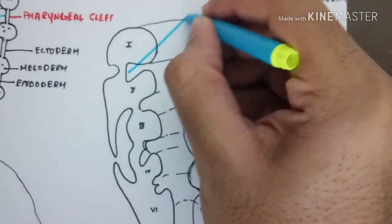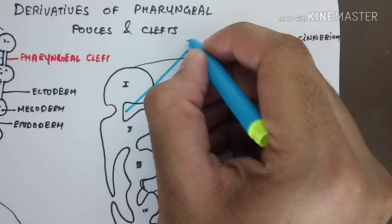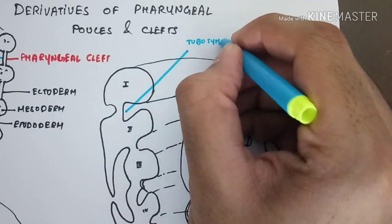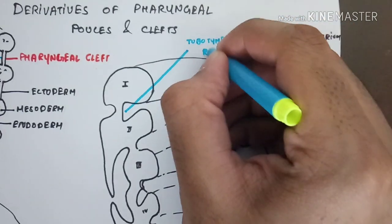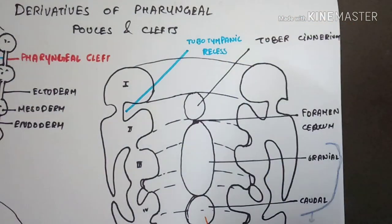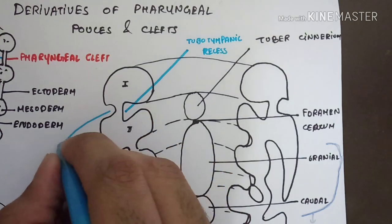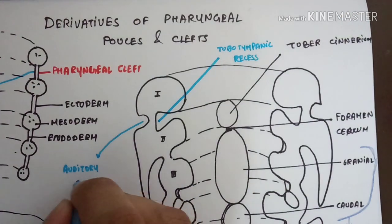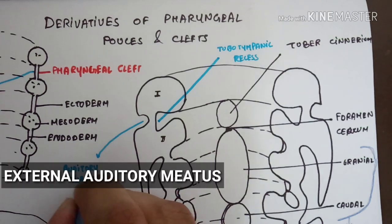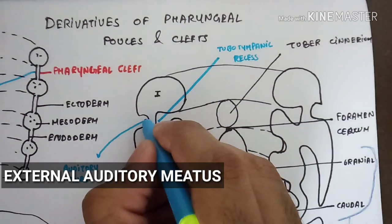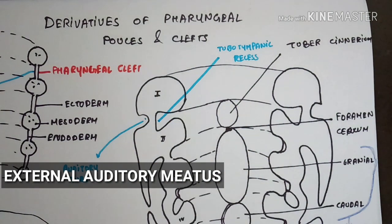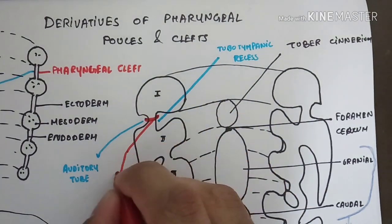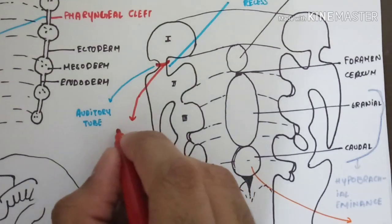Now we come to the pouches and clefts. The first pharyngeal pouch forms the tubo-tympanic recess, which gives rise to the auditory tube, the middle ear cavity, and the mastoid antrum. The first pharyngeal cleft forms the external auditory meatus, or the ear canal.